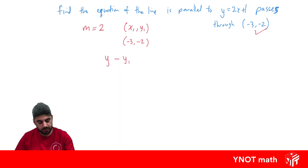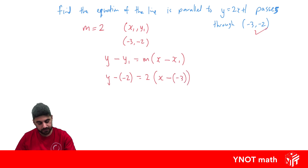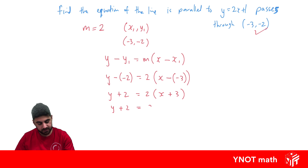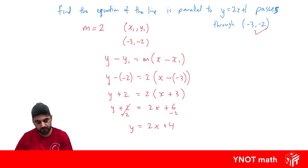Now we can use the point-gradient formula to find the equation of the line: y minus y1 equals m times (x minus x1). Substituting in: y minus (minus 2) equals 2 times (x minus (minus 3)), which gives y plus 2 equals 2 times (x plus 3). Expanding the right-hand side: 2 times x is 2x, and 2 times 3 is 6. Putting it into y equals mx plus c form by subtracting 2 from both sides gives y equals 2x plus 4. This is the line that's parallel to y equals 2x plus 1 and passes through the point minus 3, minus 2.